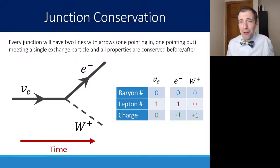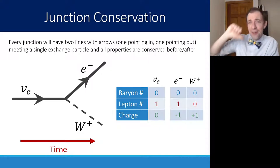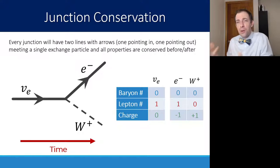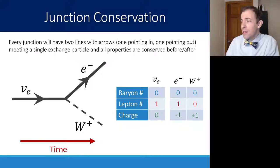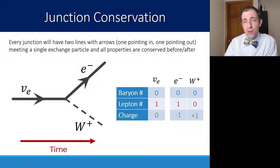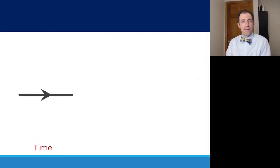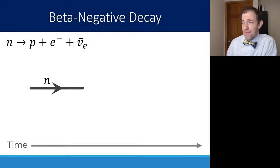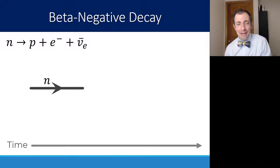You're not just going to say yes or no whether it's conserved — instead, you can use this to predict what is going to be produced. By process of elimination, figure out what needs to be there and understand how to draw your Feynman diagram. Let's do that. Let's look at beta-negative decay.